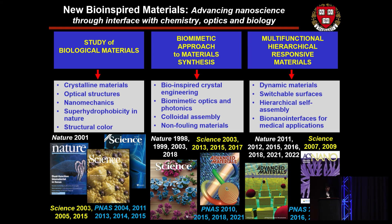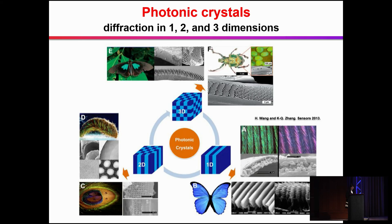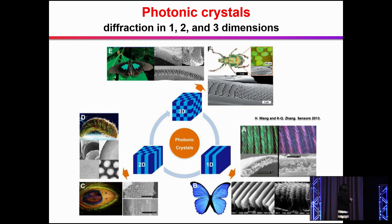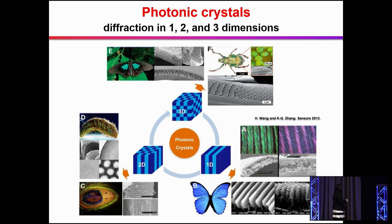Let's get to the topic of today's talk with a very short presentation on what photonic crystals are, and in particular, showing various biological creatures that use different types of photonic crystals. Photonic crystals are those that have diffraction in one, two, and three dimensions. There are 1D photonic crystals, 2D photonic crystals, and beautiful creatures each representing these, and 3D photonic structures. I'll show you more interesting examples as we go through the lecture.